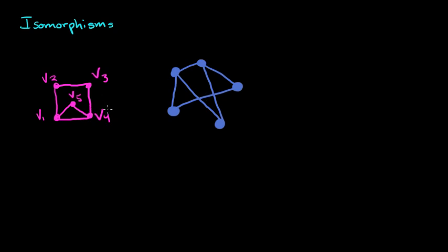We're going to want a formal way to describe that these are actually the same. In fact, these are not even labeled the same — we have a different labeling entirely: 1, 2, 3, 4, and 5. So maybe you were thinking about a graph that was a 4-cycle with some edge inside adjacent to two of the vertices, and a friend was thinking about the same graph but decided to draw it a different way with a different labeling. You want a way to formally describe that these two are essentially the same, and that's really what an isomorphism is.